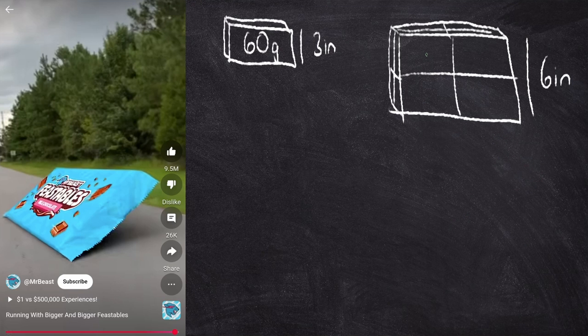So if you count the number of chocolate bars, you have one, two, three, four on the front, and then you've got another four on the back. So you've actually got eight chocolate bars.